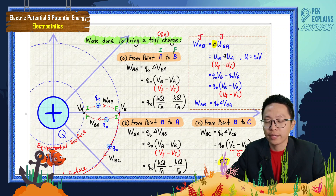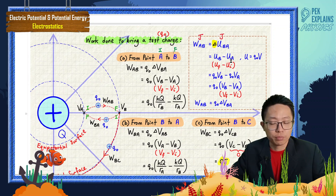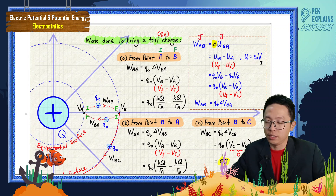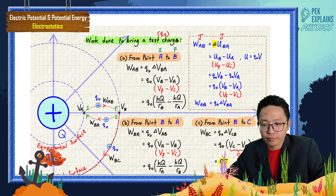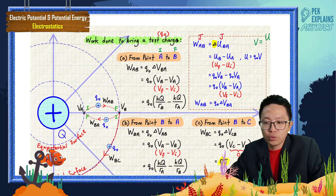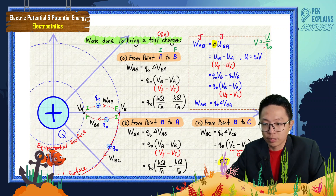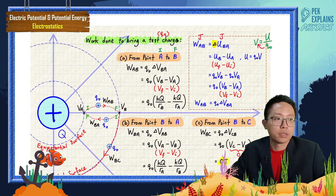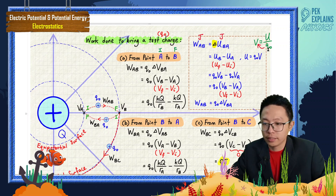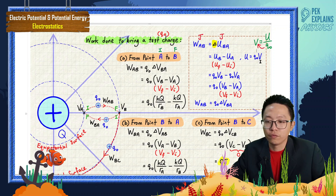So W_ab equals delta U_ba, which is U_b minus U_a — final potential energy minus initial potential energy. Potential energy is actually U = q₀V. This comes from the formula V = U / q₀, so multiplying both sides by q₀ gives U = q₀V.